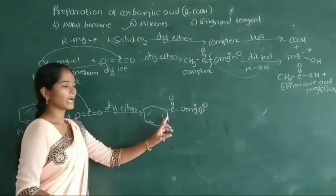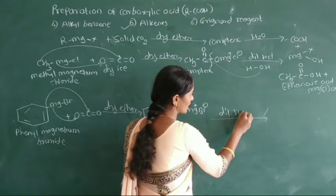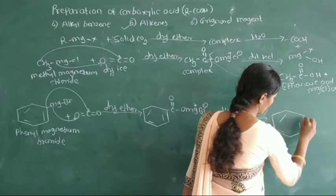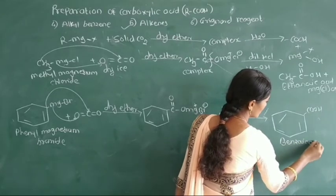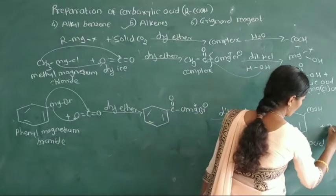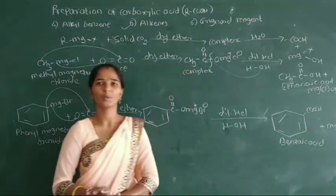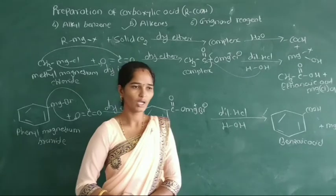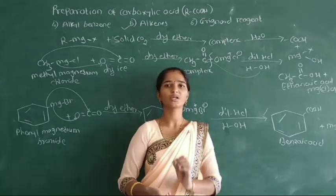It is a formation of this carboxylate ion complex, and this complex on hydrolysis in the presence of dilute acid and water gives formation of aromatic carboxylic acid — that means formation of benzoic acid — plus the remaining MgBrOH. This is the last method for preparation of carboxylic acid by using the Grignard reaction and dry ice. So in these points we have studied preparation of carboxylic acid by 6 different methods.